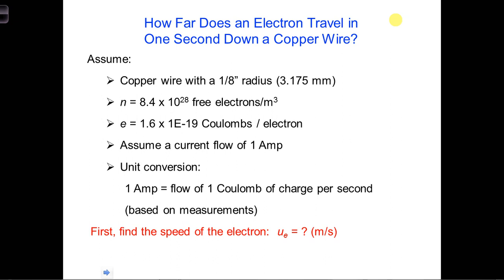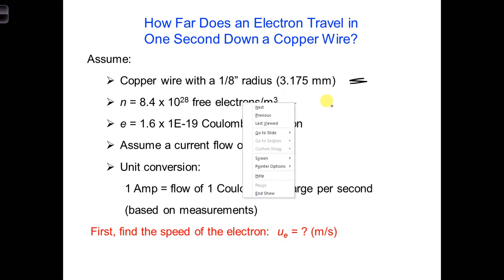Here are some assumptions you can make. The copper wire has a radius of 3.175 millimeters. The number of free electrons per meter cubed is 8.4 times 10 to the 28th. This is the number of electrons we have available to travel down the conducting wire.